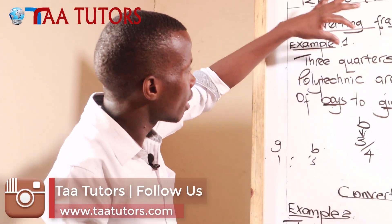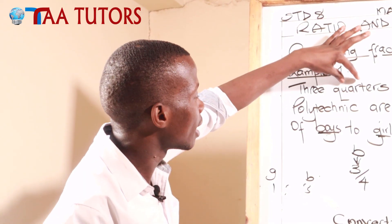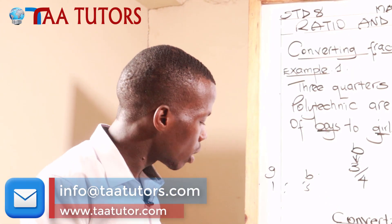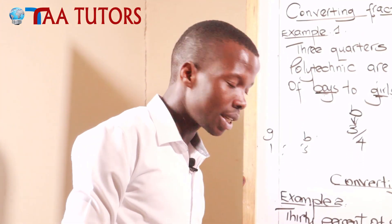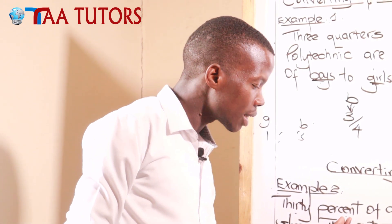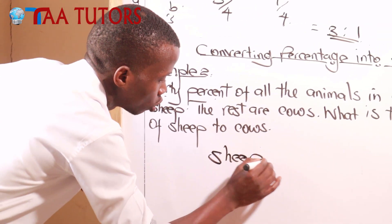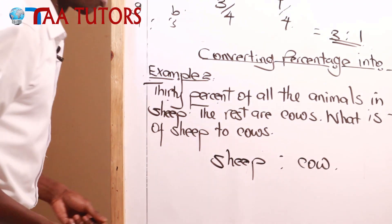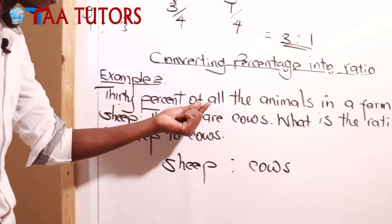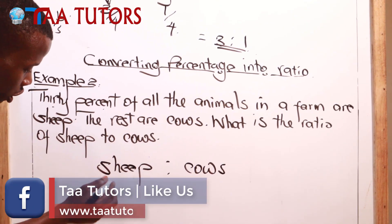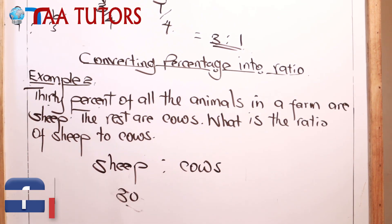In the first example we were given the fraction, but here the number is given as a percentage. We want to change this percentage into ratio. We have sheep to cows. Thirty percent of all the animals are sheep, so we know the percentage of sheep is 30.